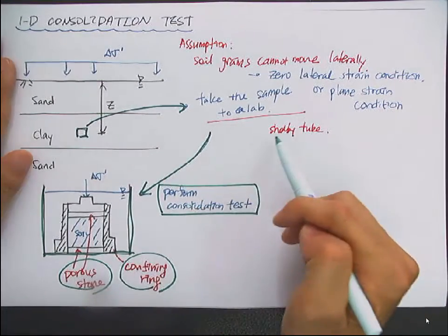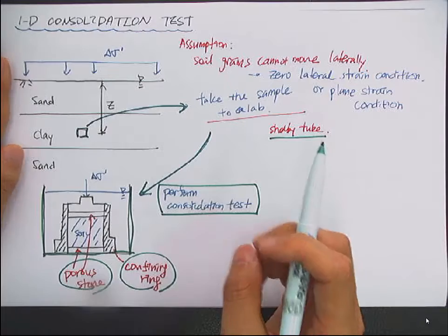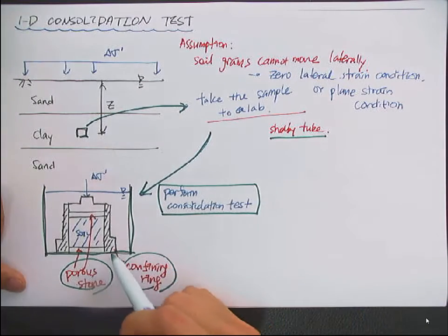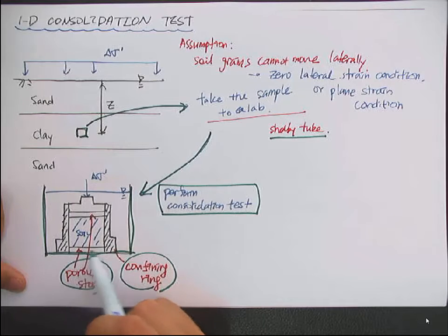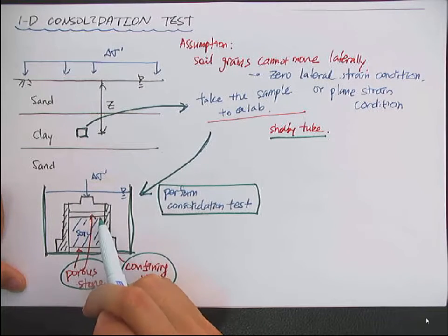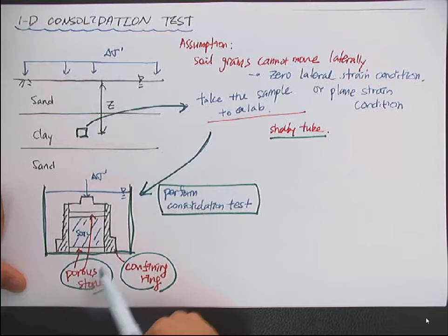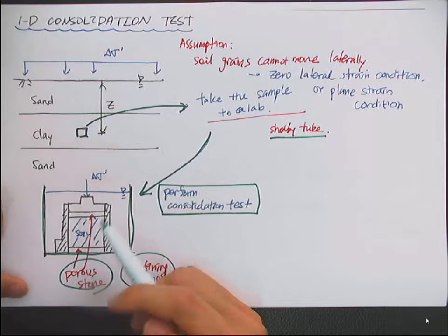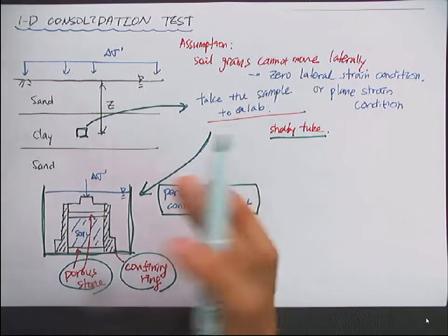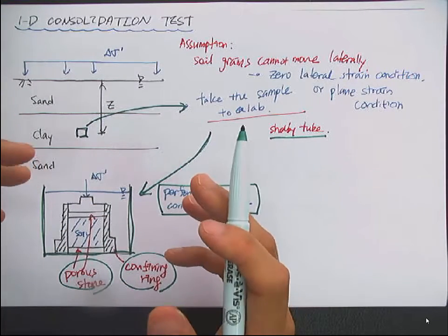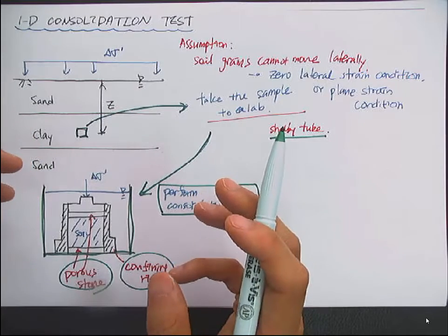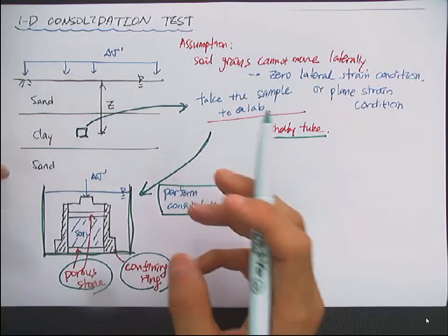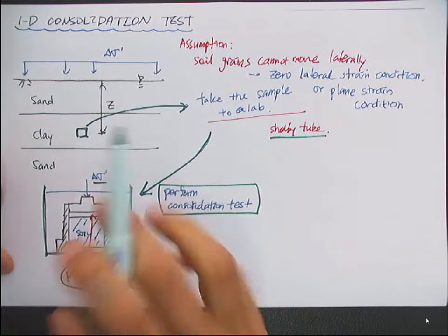First, you have a sample from the Shelby tube. Then you extrude the sample, trim it, and place it within the confining ring. Then you place the porous stone at the bottom and top of the specimen. The purpose of the porous stone is to allow water to escape — water flow to the top and to the bottom. You submerge this soil for about one or two days, then submerge it in the bath, apply the load, and measure the height change.